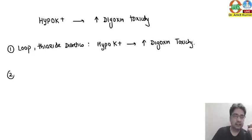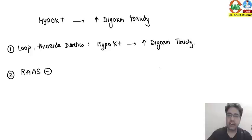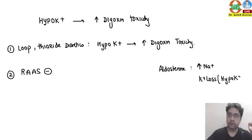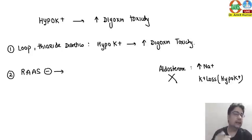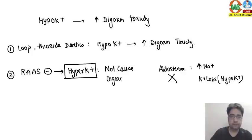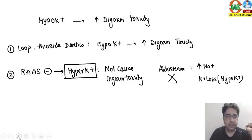Any drug that is a RAS inhibitor — a renin-angiotensin-aldosterone system inhibitor — works as follows: the function of aldosterone is to increase sodium retention and cause potassium loss or hypokalemia. If you inhibit aldosterone, the opposite effect occurs. So RAS inhibitors inhibit aldosterone and cause hyperkalemia. Hyperkalemia will not cause digoxin toxicity — it will have the opposite, protective effect.